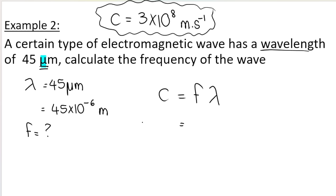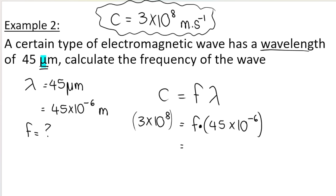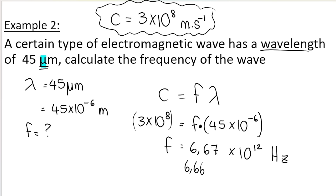Write your formula first, then substitute: c equals f times lambda, so 3 times 10 to the 8 equals f times 45 times 10 to the negative 6. Solving for f, divide both sides: f equals 3 times 10 to the 8 divided by 45 times 10 to the negative 6. Use brackets in your calculator. I get 6.67 times 10 to the 12 hertz. My calculator showed 6.6666 recurring, but in physical sciences you round to at least two decimals. Don't forget the times 10 to the 12 — that's part of your answer, and it means the frequency is very large.